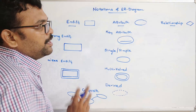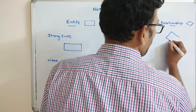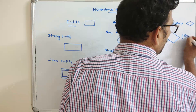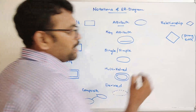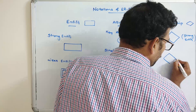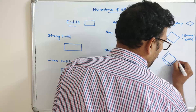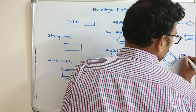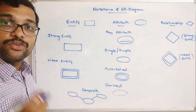For relationships, it is represented with a diamond or rhombus. A normal diamond is used to represent the relationship for a strong entity. A double diamond is used to represent the relationship for a weak entity.